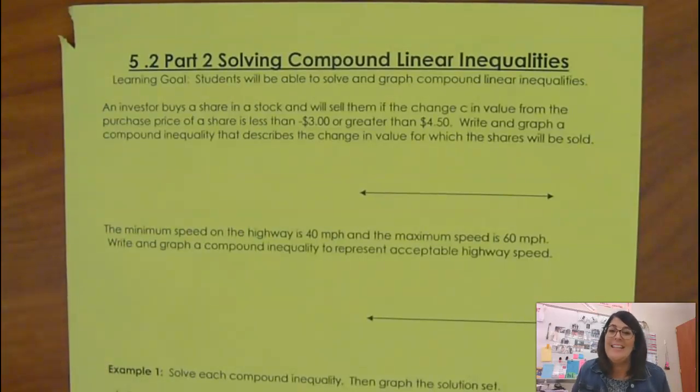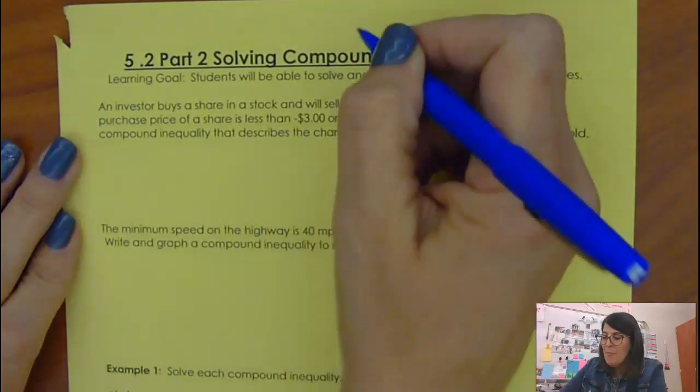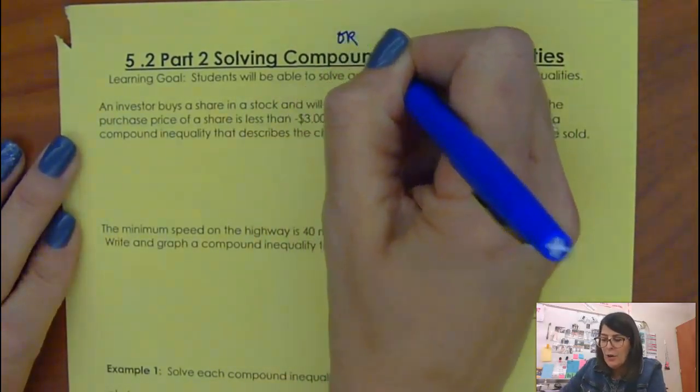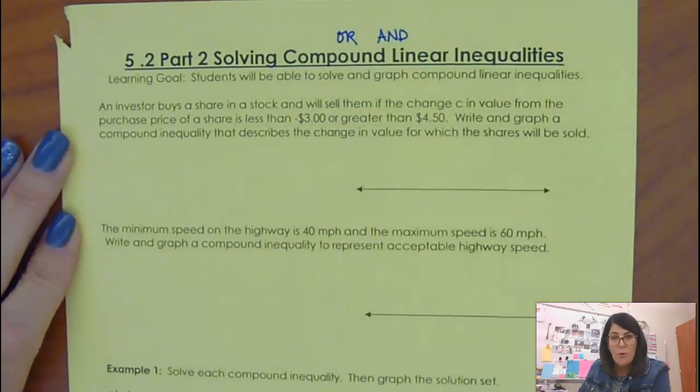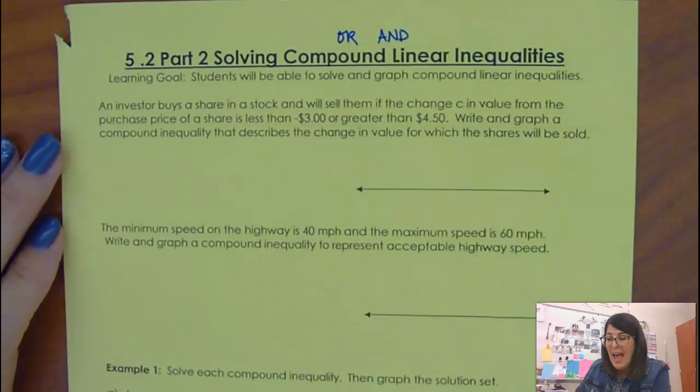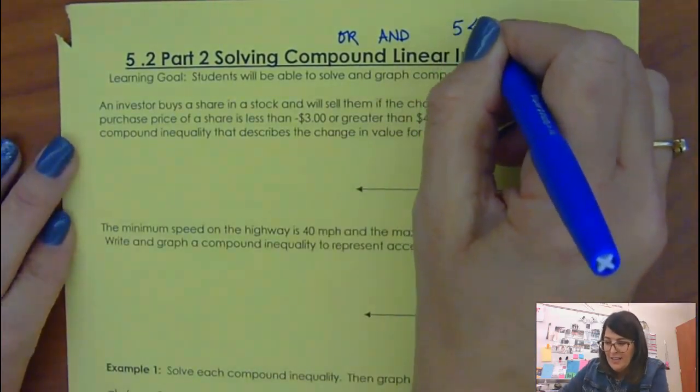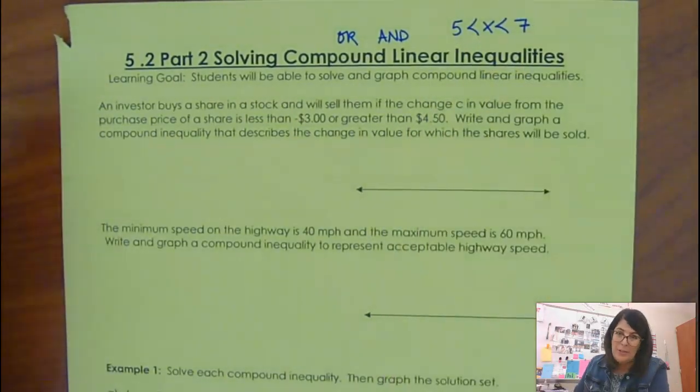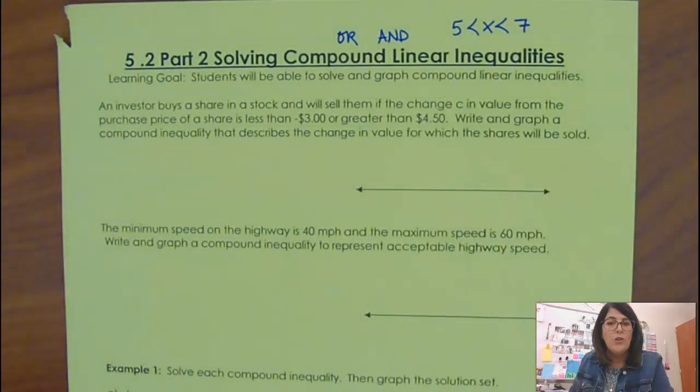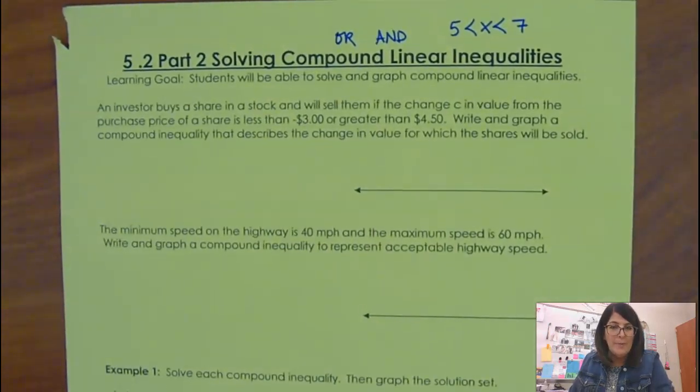Okay, what we are talking about today is solving compound inequalities. So remember, compound inequalities are ones that are ORs or ANDs. They might have the word OR or AND in them, or it might be a compound that has three parts, like five is less than X is less than seven. That's an AND, but we just don't write the word AND. So in order to get started with this, I just want to make sure we're clear on what they were, and now we're going to learn how to solve them and graph them and put it all together.